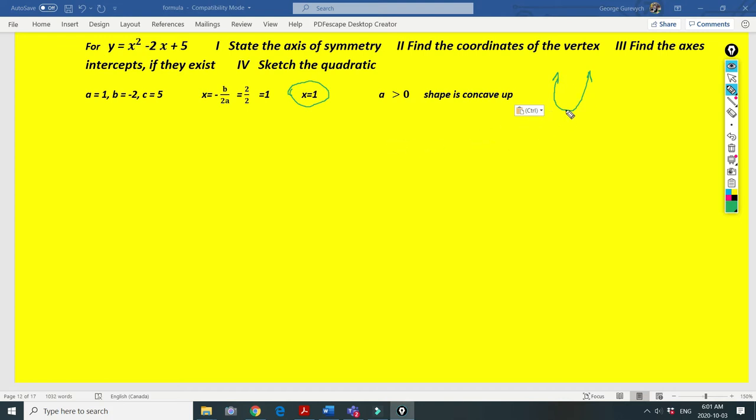And vertex. Our vertex belongs to our function, our graph, and it belongs to our axis of symmetry. So we can write for the vertex that x equals 1. Then, since it belongs to the graph, we can find y: 1 minus 2 plus 5 is 4. So this is our vertex.